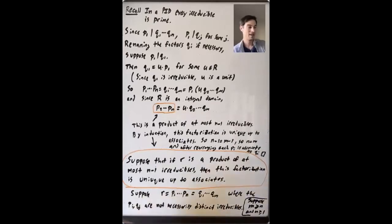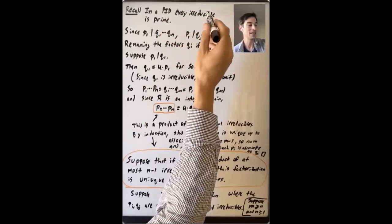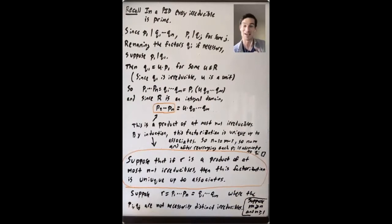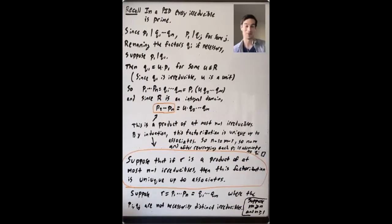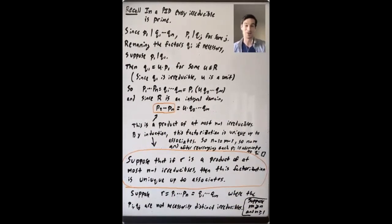We've extended our induction hypothesis by one, completing the proof that in a PID, not only can you take any non-zero non-unit element r and write it as a finite product of irreducible elements, but that factorization is unique up to associates. The key idea that makes this argument work is the clever induction on the number of irreducibles occurring in a factorization of the element.